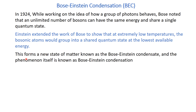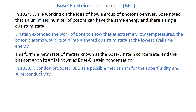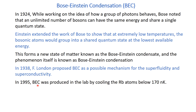This forms a new state of matter known as the Bose-Einstein condensate, and the phenomenon itself is known as Bose-Einstein condensation. In 1938, a scientist known as F. London proposed that Bose-Einstein condensation could be a possible mechanism for explaining the phenomena of superfluidity and superconductivity. In 1995, the Bose-Einstein condensate was produced in a lab by cooling rubidium atoms below 179 nanokelvin.